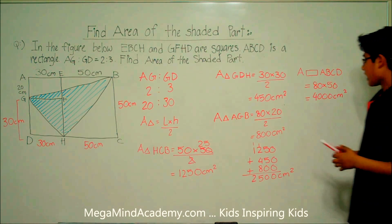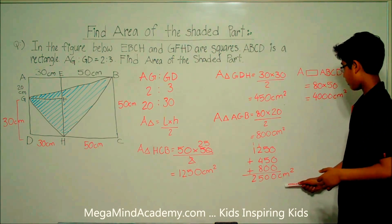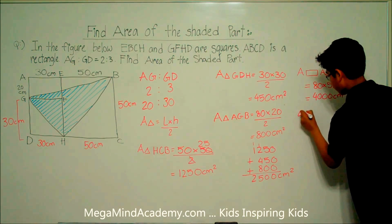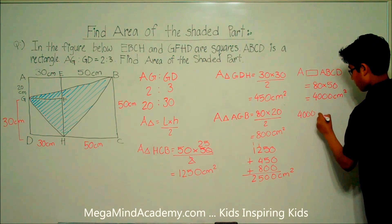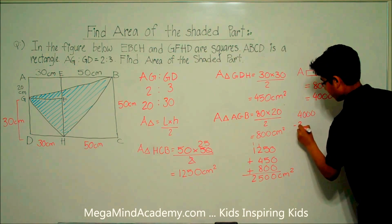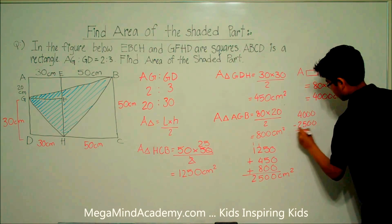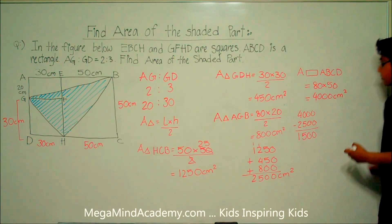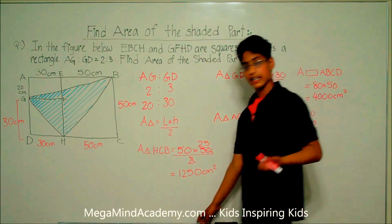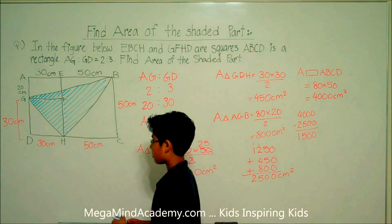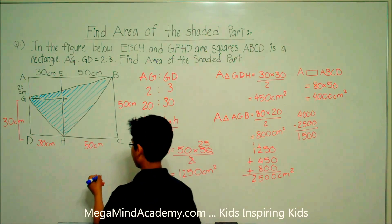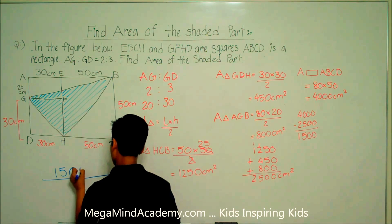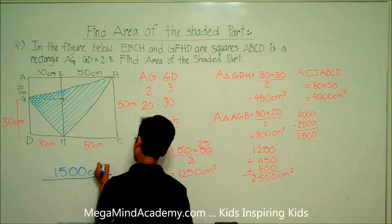Now let's subtract the total unshaded area from the area of rectangle ABCD. 4,000 centimeters squared minus 2,500 centimeters squared is equal to 1,500 centimeters squared. So the total shaded area is equal to 1,500 centimeters squared.